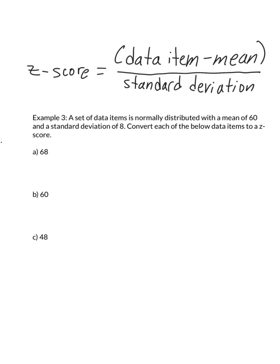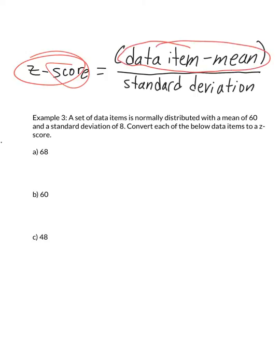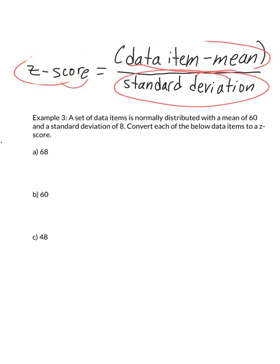Before working with data points in the normal curve, we want to standardize them by converting to a z-score. The formula is: z = (data value − mean) / standard deviation. The question will give you the mean and standard deviation every time. Note that if you compute this in one step on a calculator, you need parentheses around the numerator.